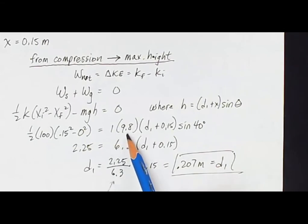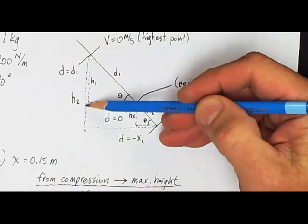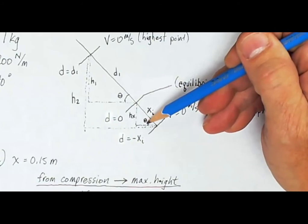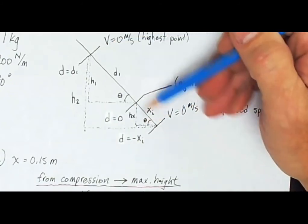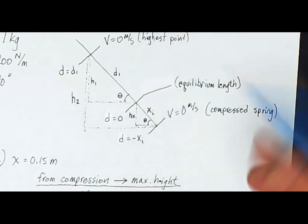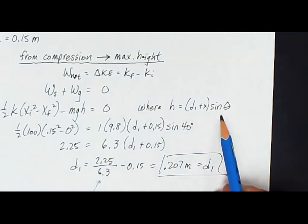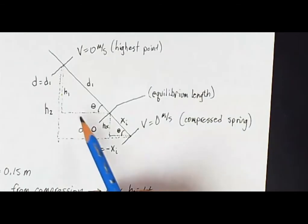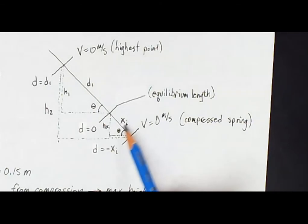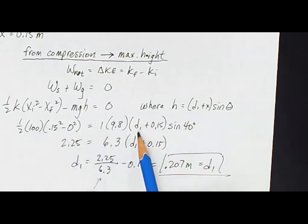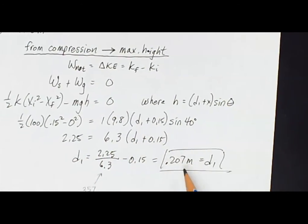I move the MGH term to the other side. The mass is 1, g is 9.8, and the height h2 is the full vertical distance over which gravity acts — that is, d1 plus x-initial times sine of the angle, since the hypotenuse times sine equals the opposite side. So I replace h2 with (d1 + x-initial) × sin θ. D1 is the only unknown. I plug in 15 centimeters for xi, do the math, and get my answer.